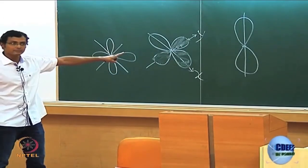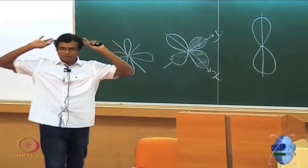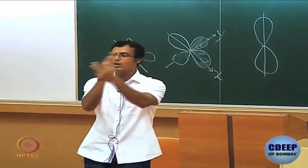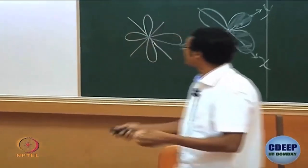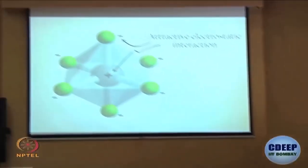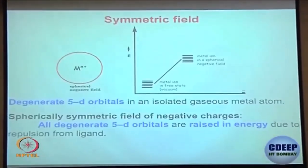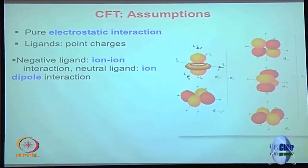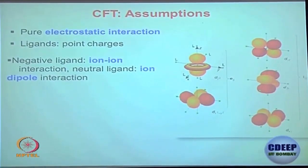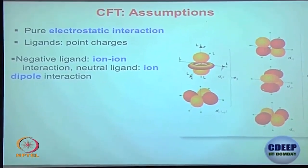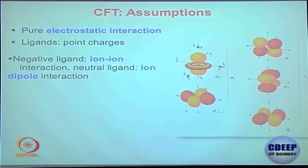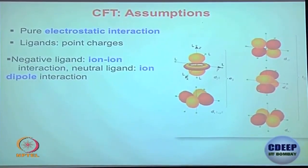You have to be really clear about the positioning of these orbitals — we will come back to that. Now, what are the crystal field theory assumptions? Very simply, these are electrostatic interactions. The metal center is a cation and the ligand is most often an anion. So it is a cation-anion interaction, an electrostatic or ion-ion or ion-dipole interaction.